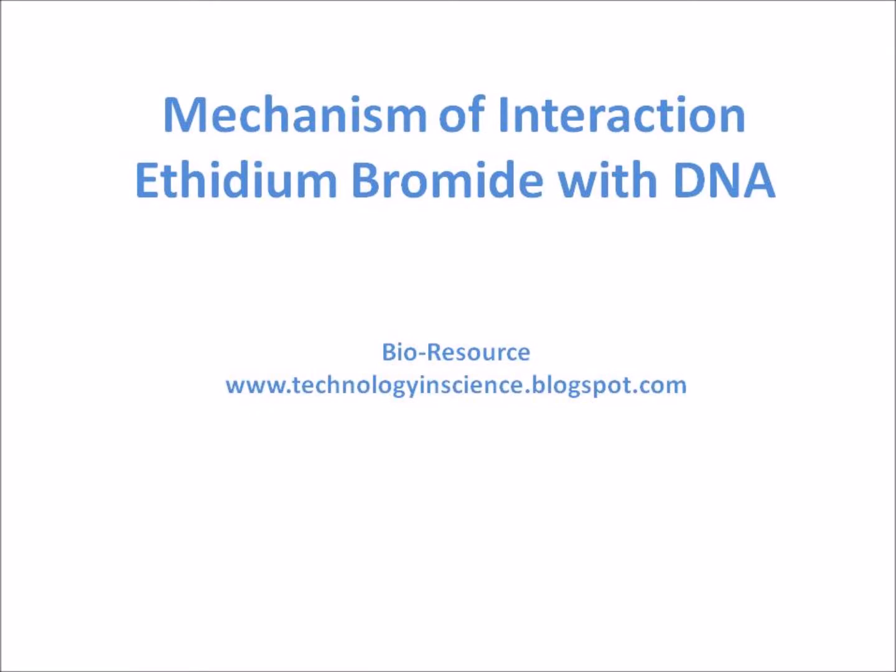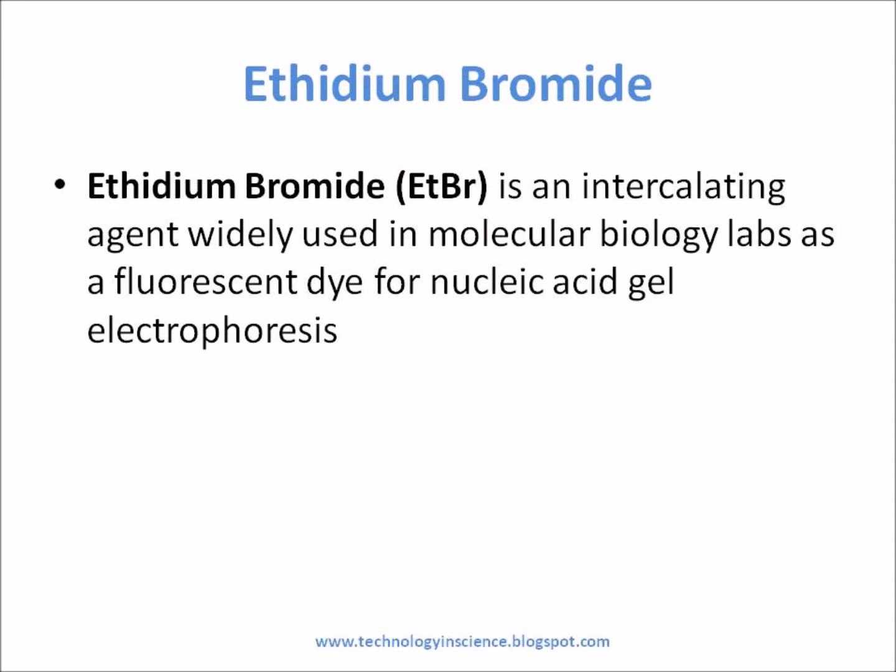Ethidium bromide is an intercalating agent, widely used in molecular biology labs as a fluorescent dye for nucleic acid gel electrophoresis. Ethidium bromide is very sensitive in detecting DNA bands on gel.